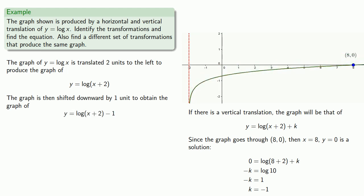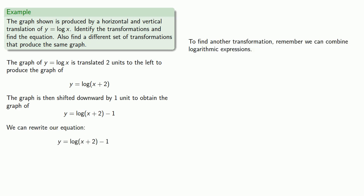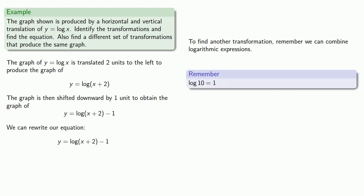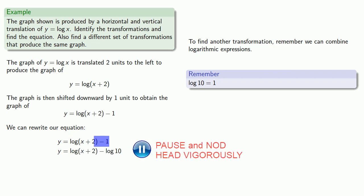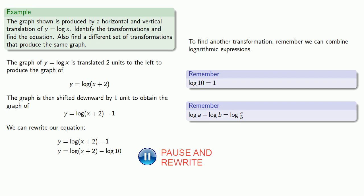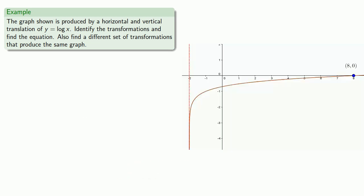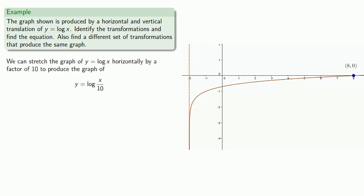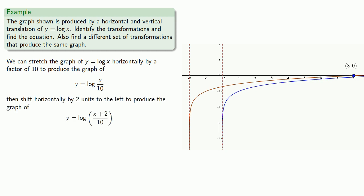This gives us the graph of y equals log of x plus 2 minus 1. To find another transformation, remember we can combine logarithmic expressions. Since log of 10 is equal to 1, this minus 1 is the same as minus log 10. A difference of logs can be rewritten as a quotient, so this is y equals log of x plus 2 divided by 10. This suggests a different set of transformations: stretch the graph of y equals log x horizontally by a factor of 10 to produce log of x divided by 10, then shift horizontally 2 units to the left to produce y equals log of x plus 2 divided by 10.